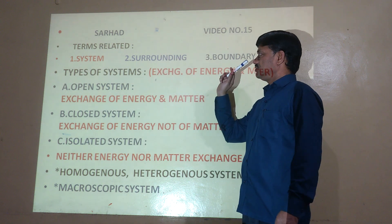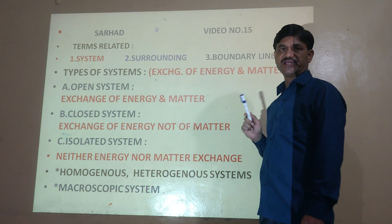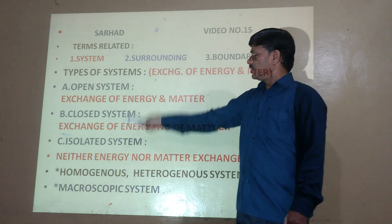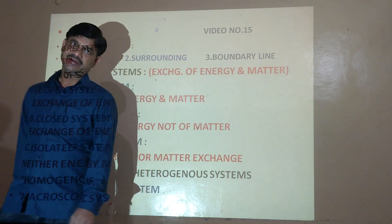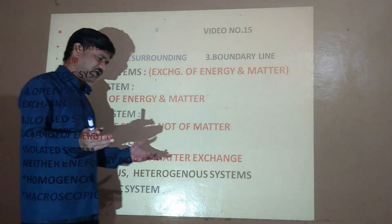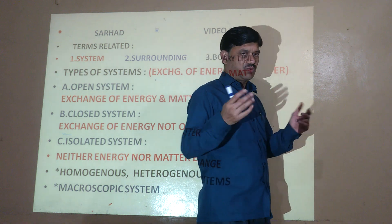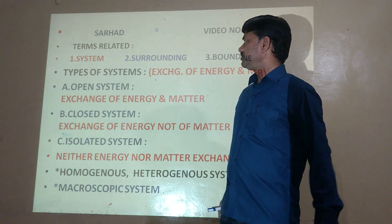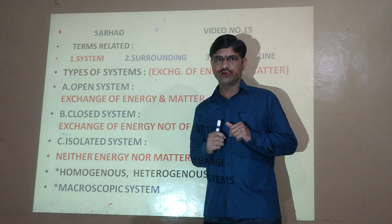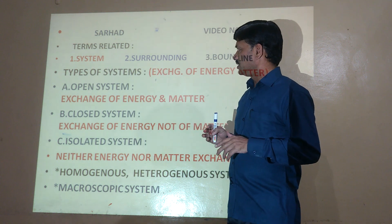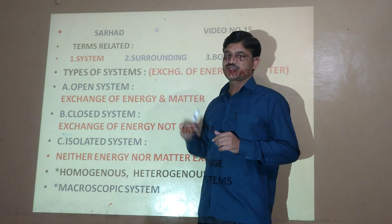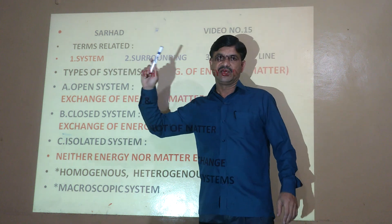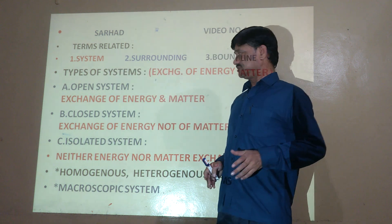In this chapter we deal with three basic terms: system, surrounding, and boundary line. For example, in a physics practical — a sound experiment — you require a glass column, liquid, and tuning fork; that setup becomes the system. In biology, performing a dissection experiment requires a dissection tray, dissection box, and the species — that also becomes the system. In chemistry, suppose we are performing a titration.